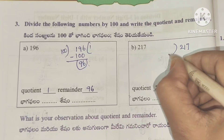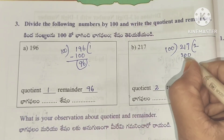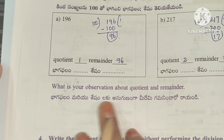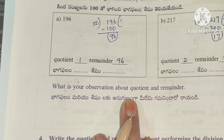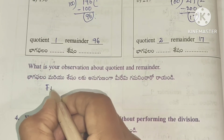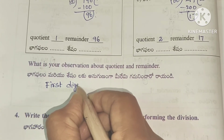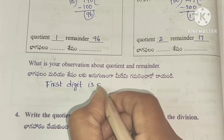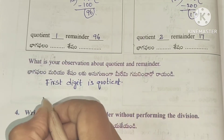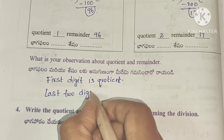We will do the division: 100 times 2 is 200, subtraction gives 17. What is your observation about the quotient and remainder? The first digit is the quotient and the last two digits are the remainder.